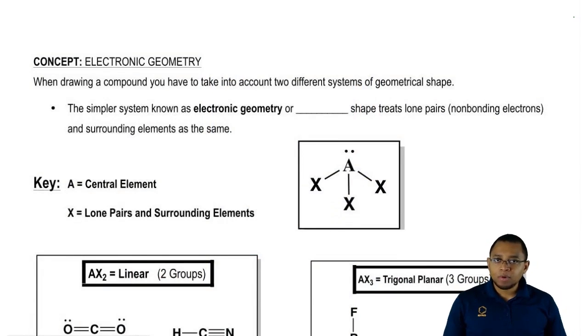When we're describing the shape or geometry of a compound, there are two systems that we use: electronic geometry and molecular geometry.